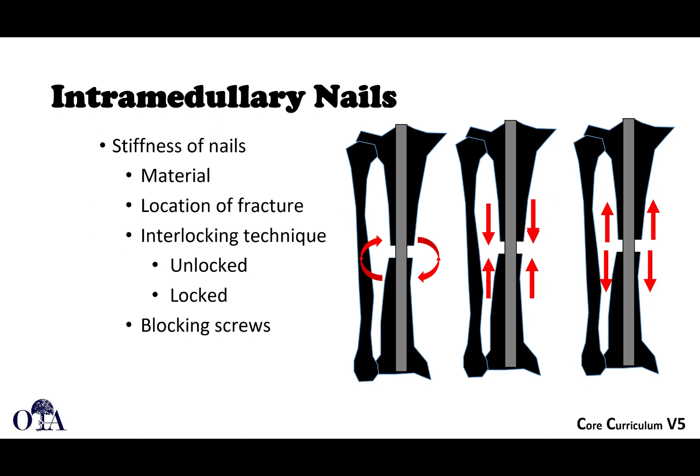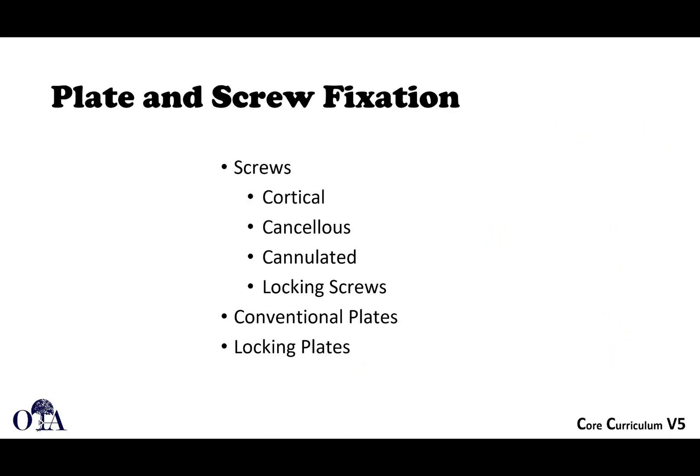There are other things we can do with intramedullary nails to affect mechanics, including interlocking screws and blocking screws. Blocking screws prevent a rod from toggling inside the bone, for instance at the metaphyseal level, essentially blocking the rod into place and narrowing the canal.